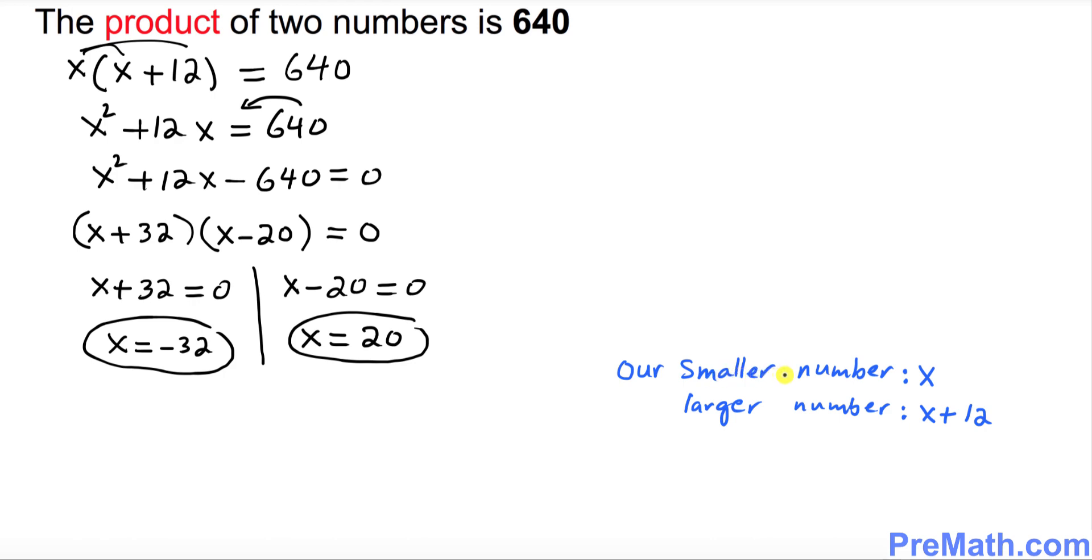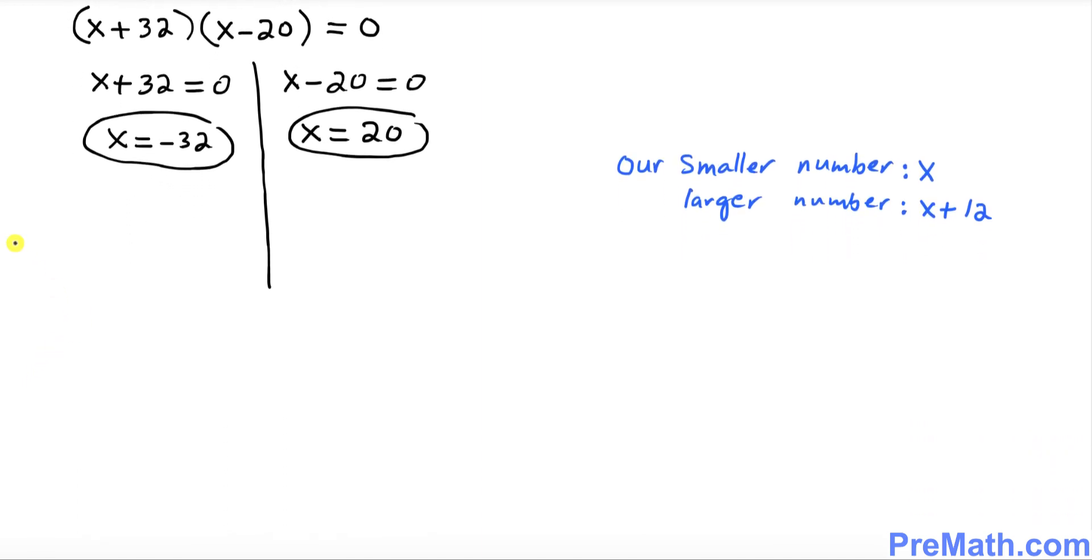But we know our smaller number was x and the larger number is x plus 12. So if we pick this as a smaller number—if I say the smaller number is negative 32, then the larger number is going to be negative 32 plus 12, which is negative 20. So the smaller number is negative 32 and the larger number is negative 20.